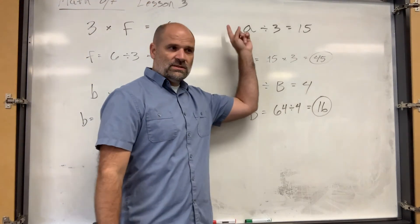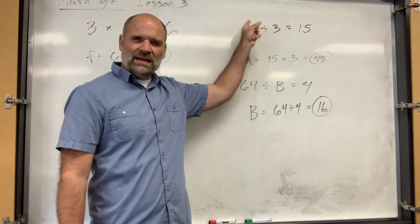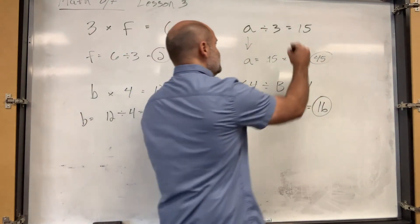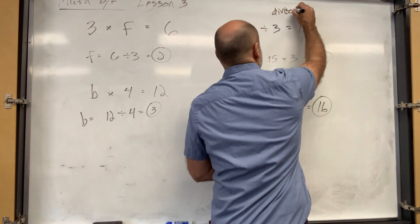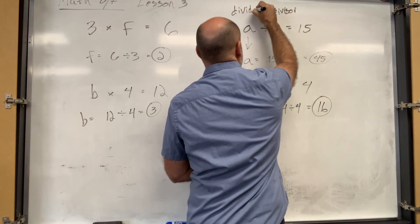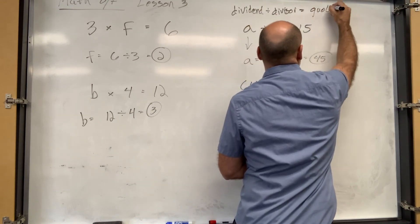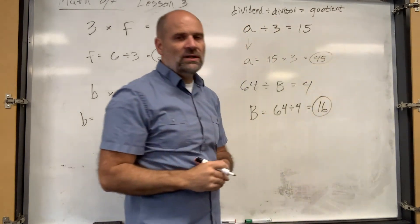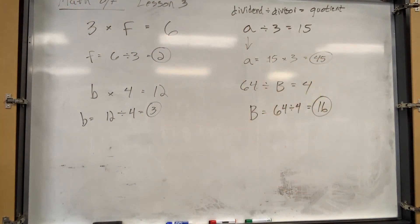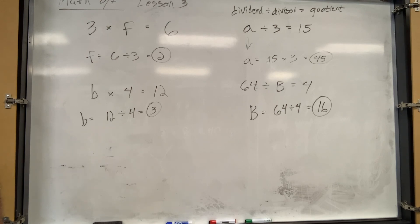If you're missing the first one — what's that called? The divisor? So the dividend divided by the divisor equals the quotient. If you're missing the dividend, just go backwards: quotient times divisor equals dividend. If you're missing the divisor, then it's another division problem: dividend divided by quotient equals that missing divisor. Remember, you don't have to memorize that — just try it and let your brain work it out.